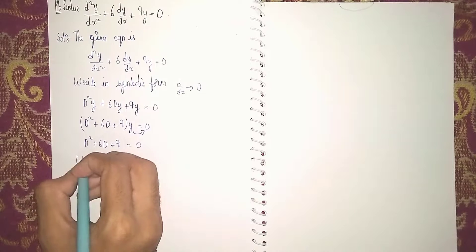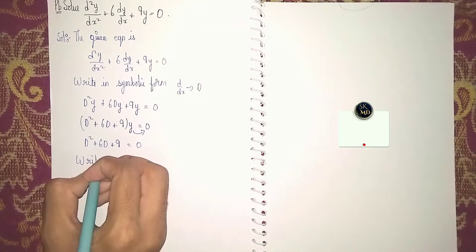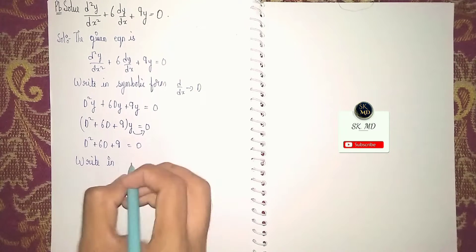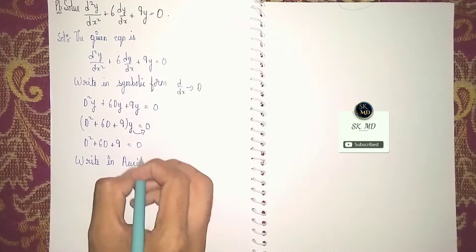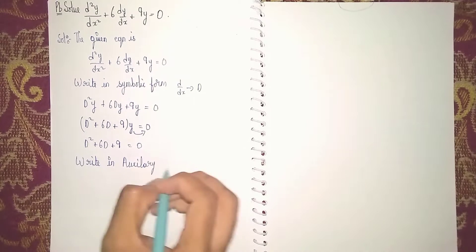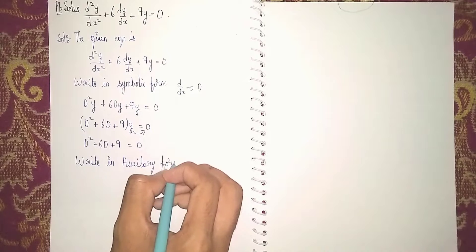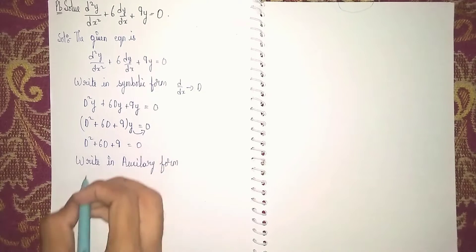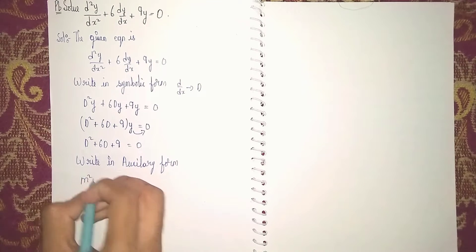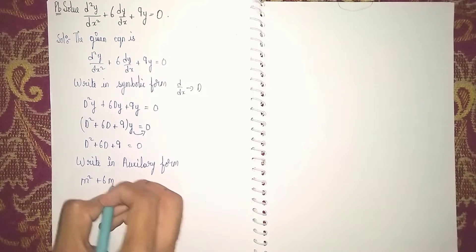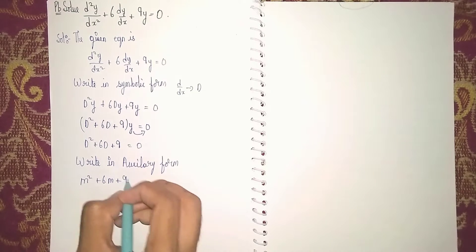Now write in auxiliary form. Auxiliary form means instead of D we put m. So it becomes m² + 6m + 9 = 0.